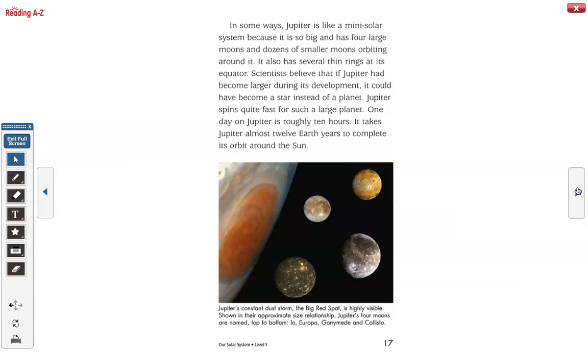Jupiter's constant dust storm, the big red spot, is highly visible. Shown in their approximate size relationship, Jupiter's four moons are named top to bottom, Io, Europa, Ganymede, and Callisto.